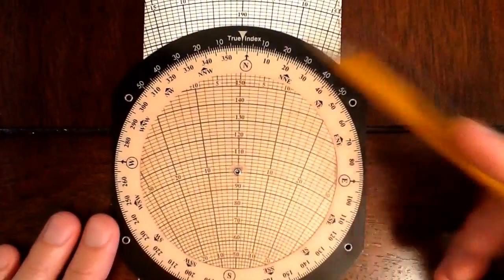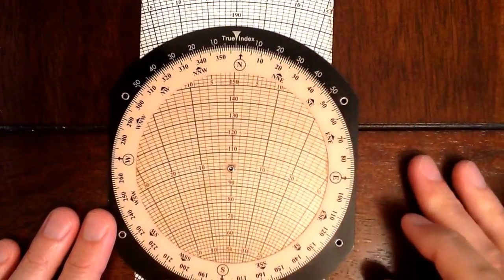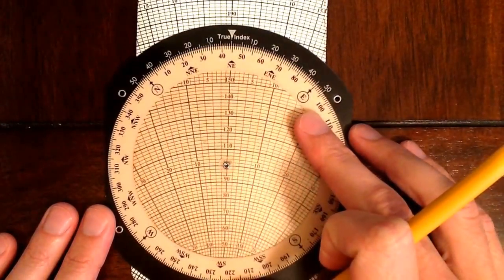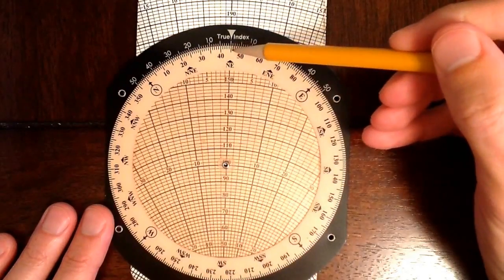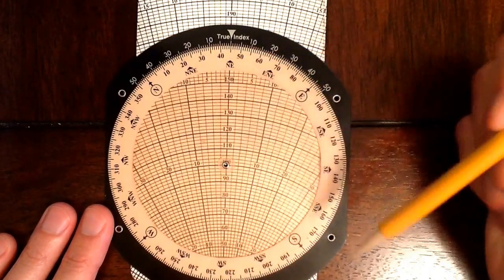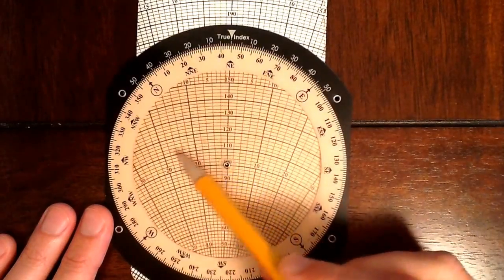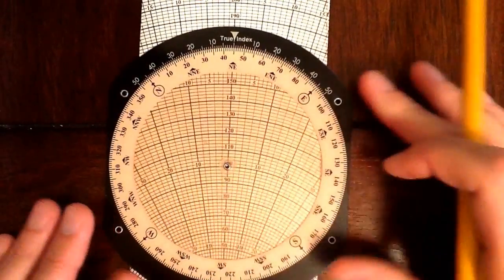So in this example, the wind is from the north at 20, but we're flying 45 degrees. So I'm going to rotate the card around and set the course up here at 45 degrees. Now I know my airspeed is 110. So I will set my wind dot to be over the airspeed arc of 110.